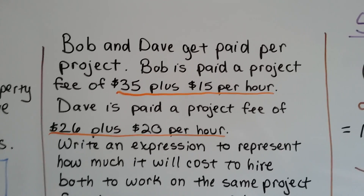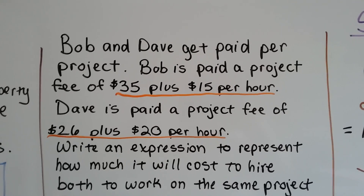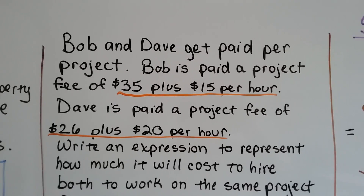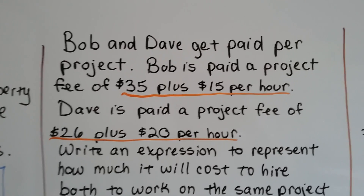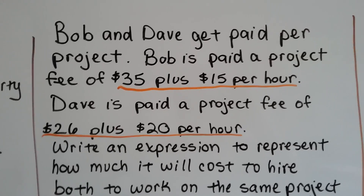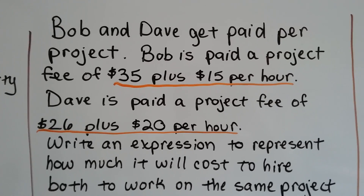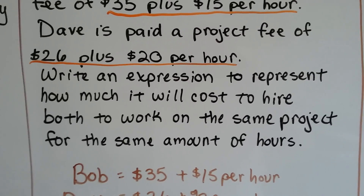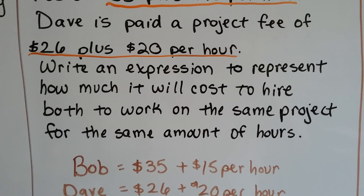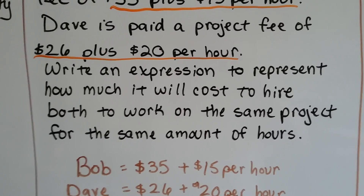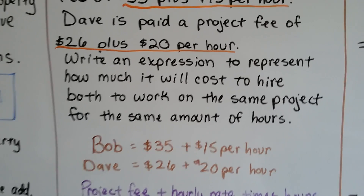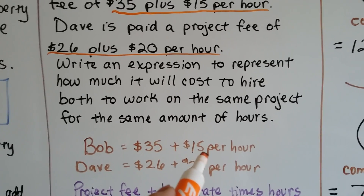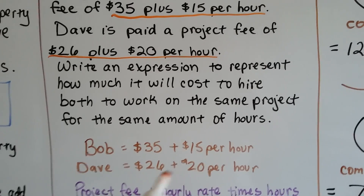We can use these properties to help us. Bob and Dave get paid per project: Bob is paid a project fee of thirty-five dollars plus fifteen dollars per hour for each hour he works, and Dave is paid a project fee of twenty-six dollars plus twenty dollars for each hour he works. Write an expression to represent how much it'll cost to hire both of them to work on the same project for the same number of hours.